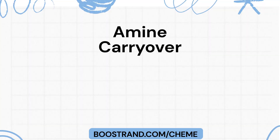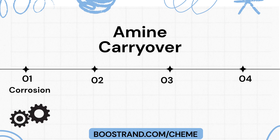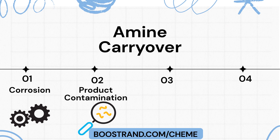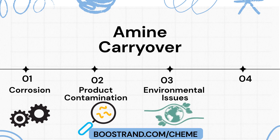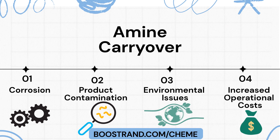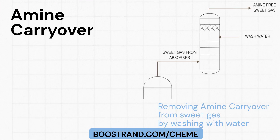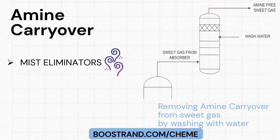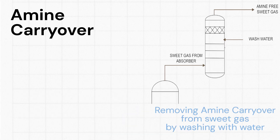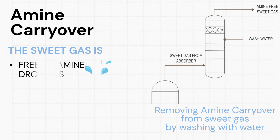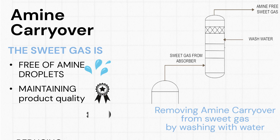Amine carryover occurs when liquid amine droplets are entrained in the sweet gas leaving the absorber. This can lead to several operational challenges: damage to downstream equipment and pipelines, effects on natural gas quality and downstream processing, potential regulatory violations due to amine emissions, and additional amine replenishment required. To mitigate amine carryover, different techniques are considered such as mist eliminators, amine filtration, or washing with water. These measures ensure that the sweet gas is free of amine droplets, maintaining product quality and reducing corrosion risks.